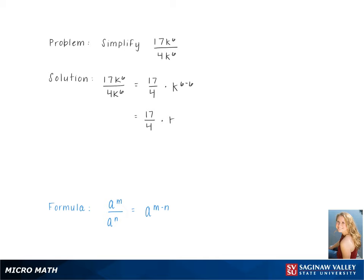This gives us 17 over 4 times k to the 0, which simplifies to 17 over 4 times 1, as anything to the 0 power is 1, giving us a final answer of 17 over 4.